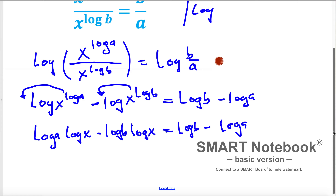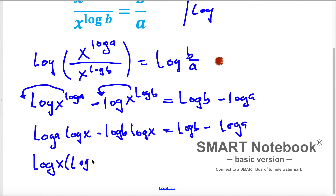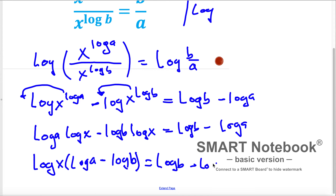Now, because on both sides we have a log x, we can factor out log x on the left side. So we can write log x times (log a minus log b) equals log b minus log a.